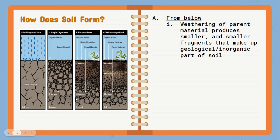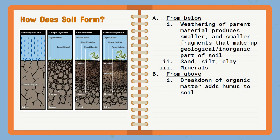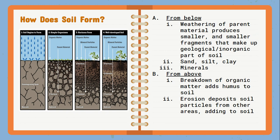Weathering produces percentages of sand, silt, and clay, as well as minerals. From above, the breakdown of organic matter — things like living things — is going to add humus to the soil from above, and erosion can wind up depositing any soil particles from one area to another.